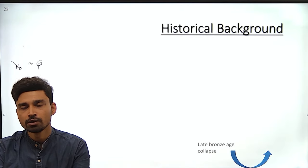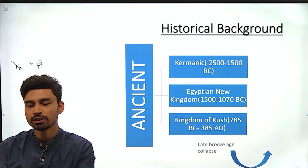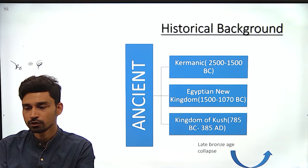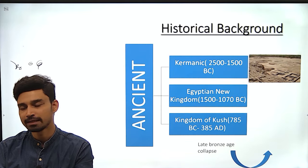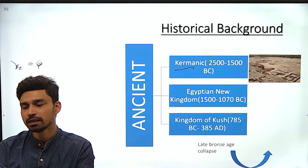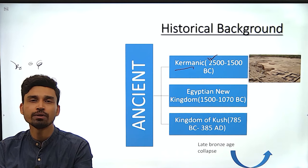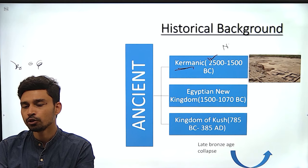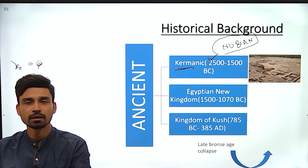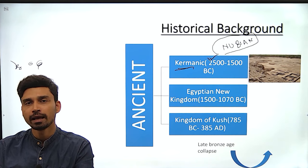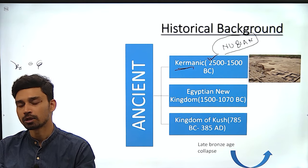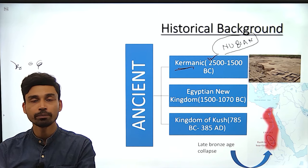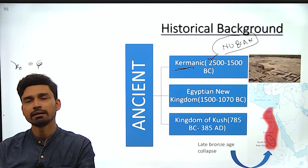Now let us understand the historical background of Sudan. We can divide the overall history of Sudan into three major chronological divisions: ancient, medieval, and modern. The first civilization that ruled Sudan, somewhere between 2500 to 1500 BC, was the Karmani Kingdom — also called the Kingdom of Karma. It was a Nubian empire that developed in the river valley of the Nile and controlled a large territory of northern and central Sudan.